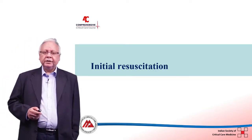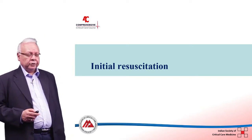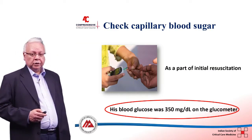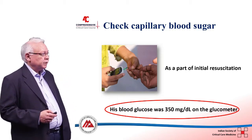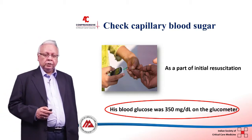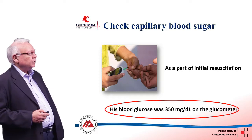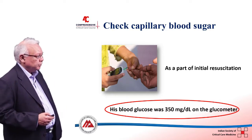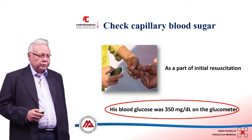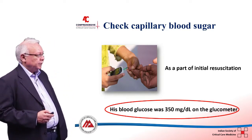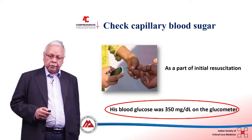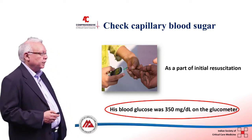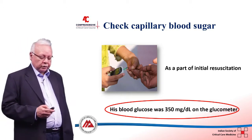So how do we initially resuscitate? We should do the ABC for this patient — airway, breathing, and circulation — but we should not forget to check the capillary blood sugar as part of initial resuscitation, because it is imperative that his sugar needs to be controlled. If it is hypoglycemic, that needs to be corrected. Point-of-care capillary blood sugar was checked and came out to be 350 milligrams, which was clearly hyperglycemic. There has been debate whether point-of-care capillary blood sugars are as accurate as lab blood sugars through venous or arterial samples, but those take a long turnaround time, so capillary blood sugars remain the point-of-care test for hyperglycemia management.